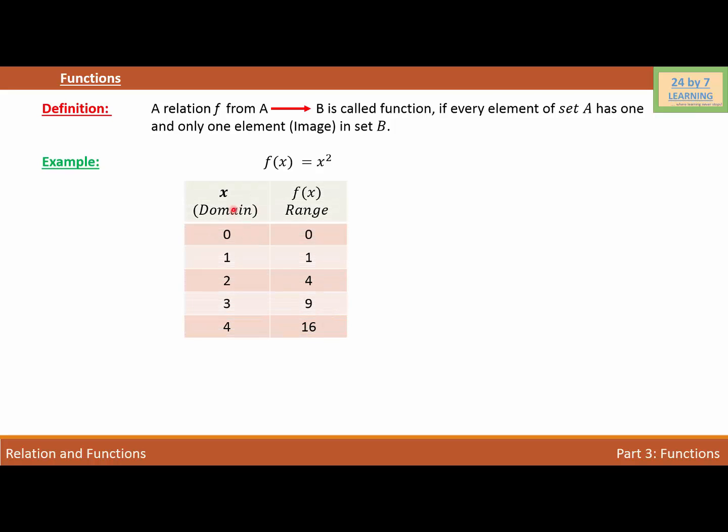Here is my table where x is the domain and f(x) is the value of the function at x, which will be my range. If I take 0 for x, then f(x) will be 0. x equals 1, f(x) will be 1. x equals 2, f(x) will be 4. x equals 3, f(x) will be 9. And for x equals 4, f(x) will be 16.